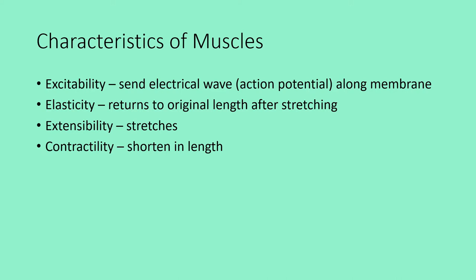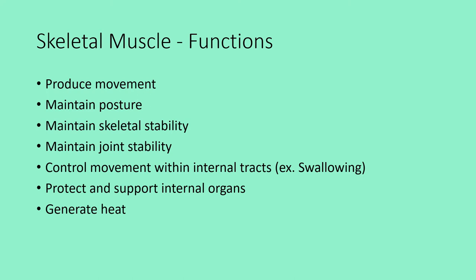Some characteristics of muscles include: excitability — the ability to send an electrical impulse, or action potential, along the membrane; elasticity — after stretching it returns to its original length; extensibility — it can stretch; and contractility — it can shorten in length. There is obviously a lot of movement associated with muscles.